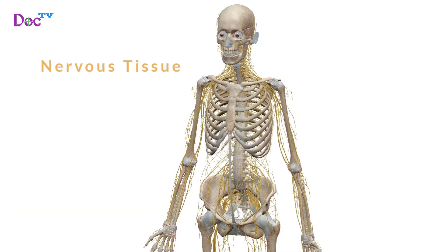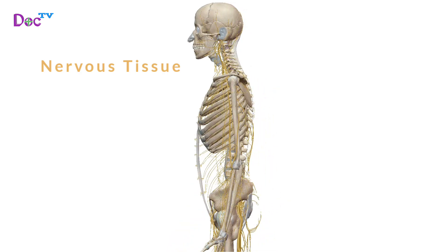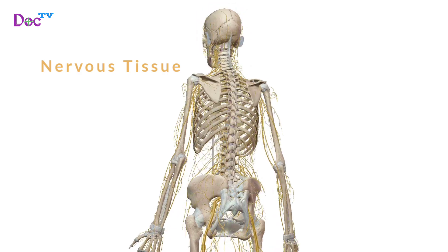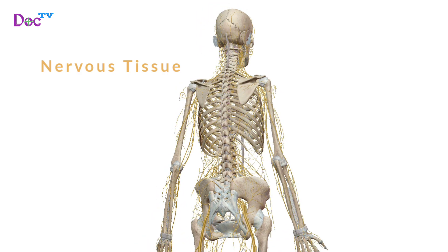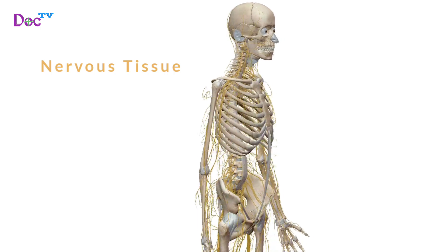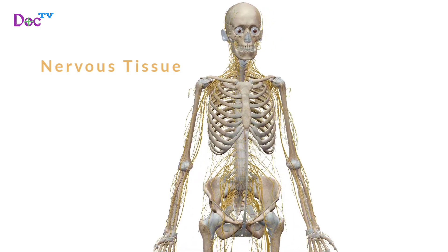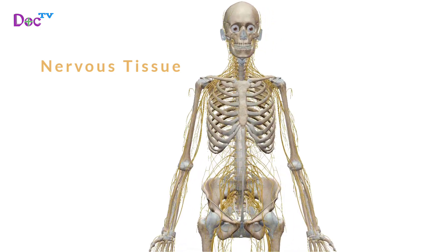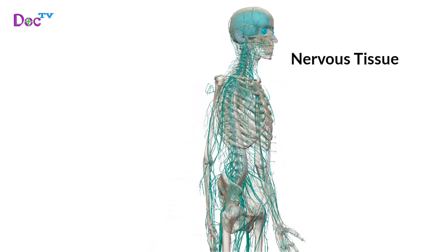Nervous tissue consists of cells called neurons, which possess information, and cells that support them called neuroglia. The nervous system is made up entirely of nervous tissue.